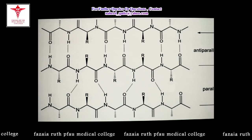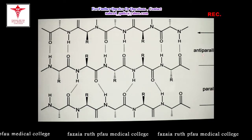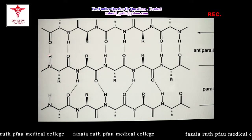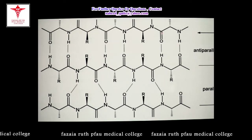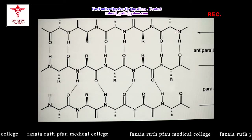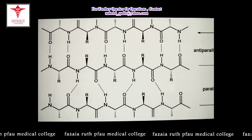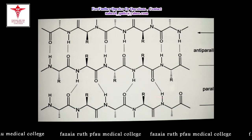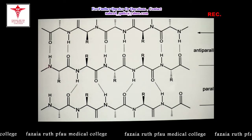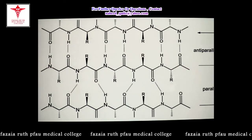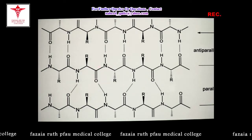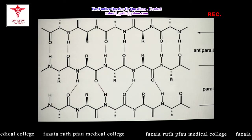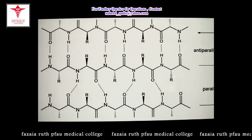The beta pleated sheet can be in parallel or anti-parallel direction. The arrows indicate direction from the amino group toward the carboxyl group of the peptide chain. These strands may be segments of the same polypeptide chain or segments from different polypeptide chains. In the parallel beta pleated sheet, the adjacent strands are stabilized by hydrogen bonds that are slanting in direction — not perpendicular.